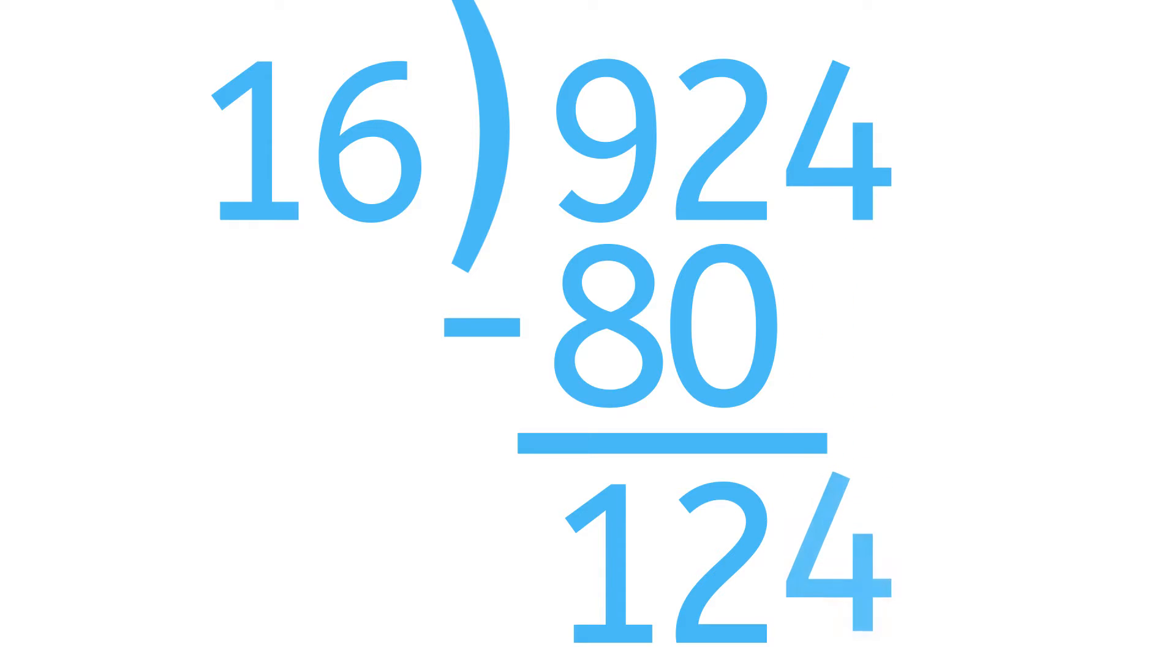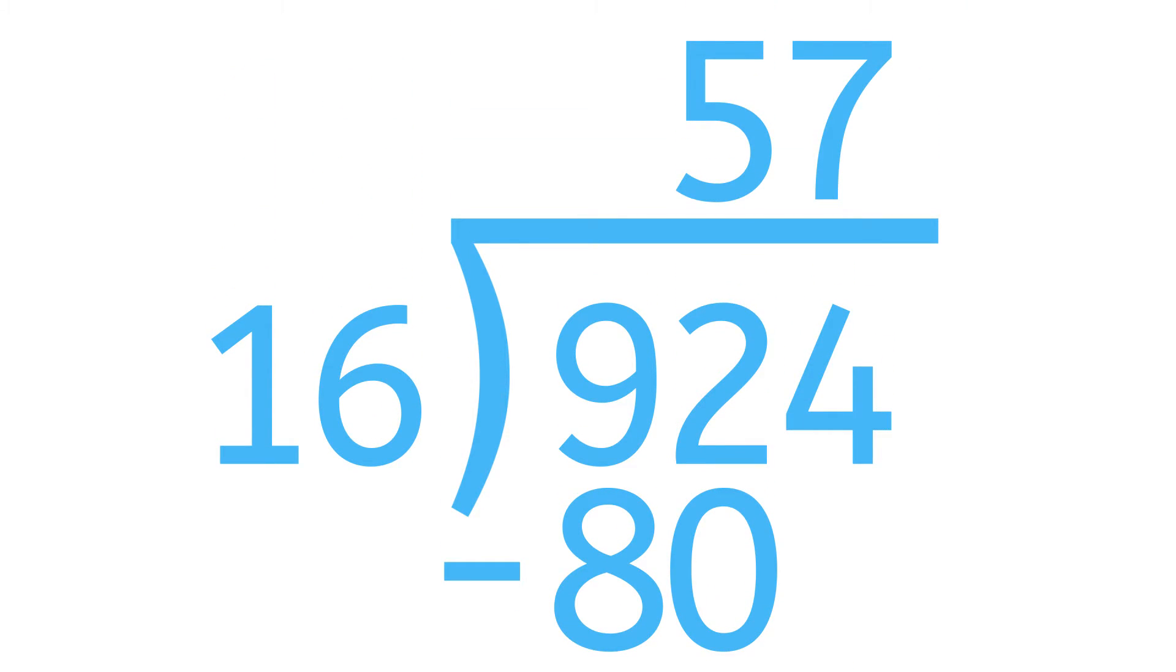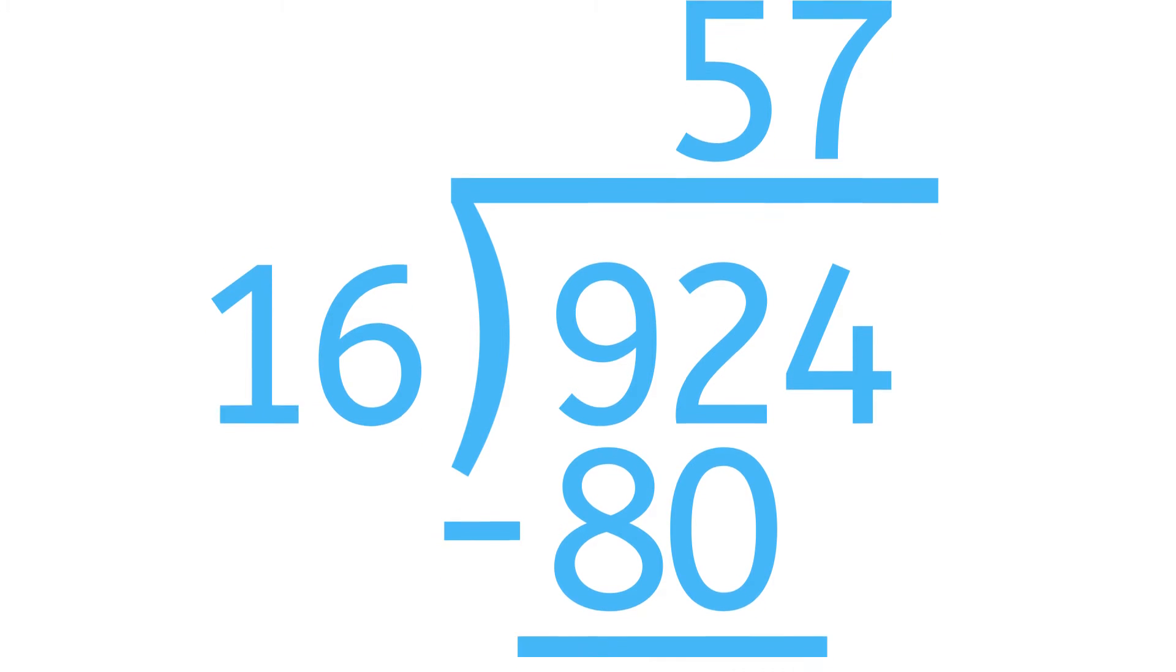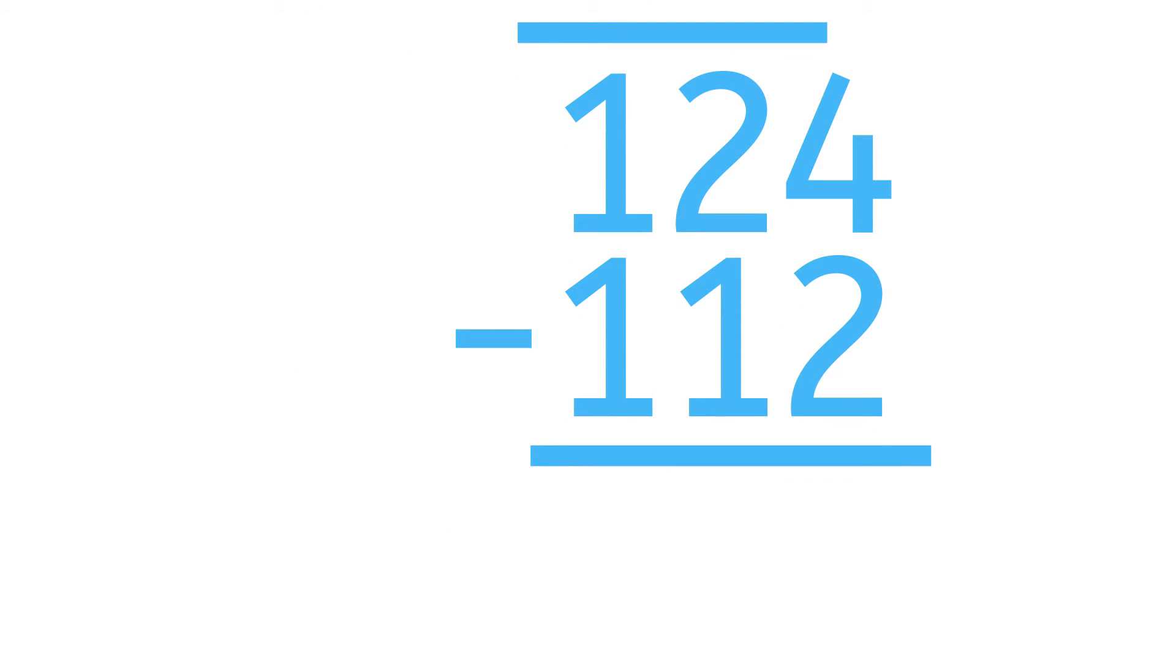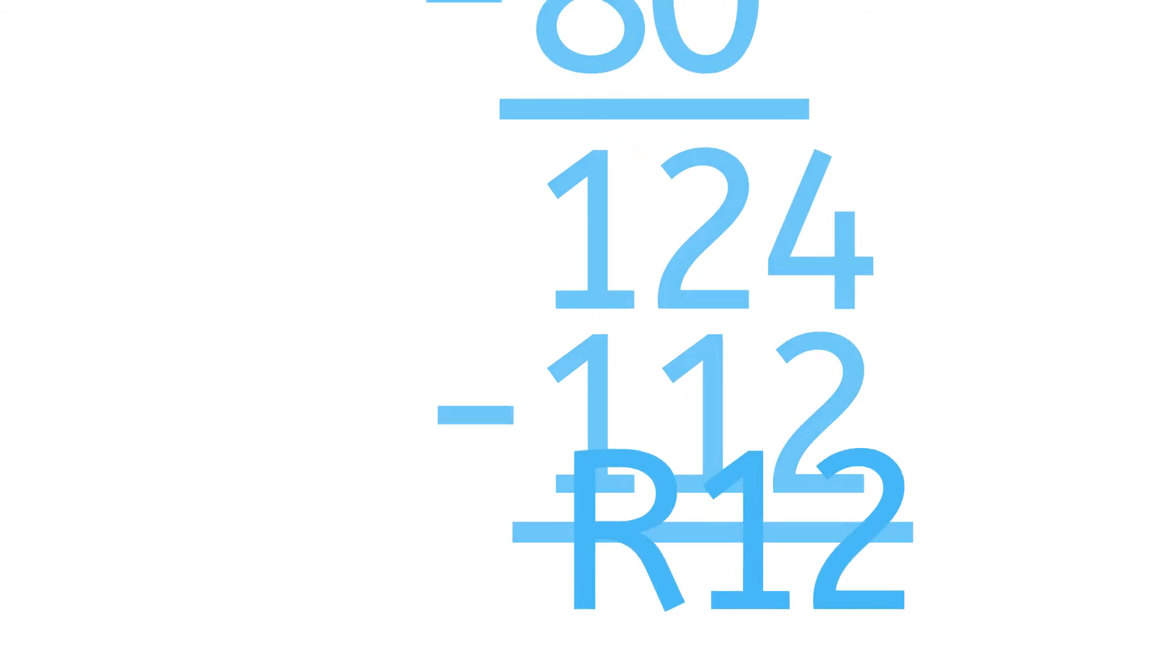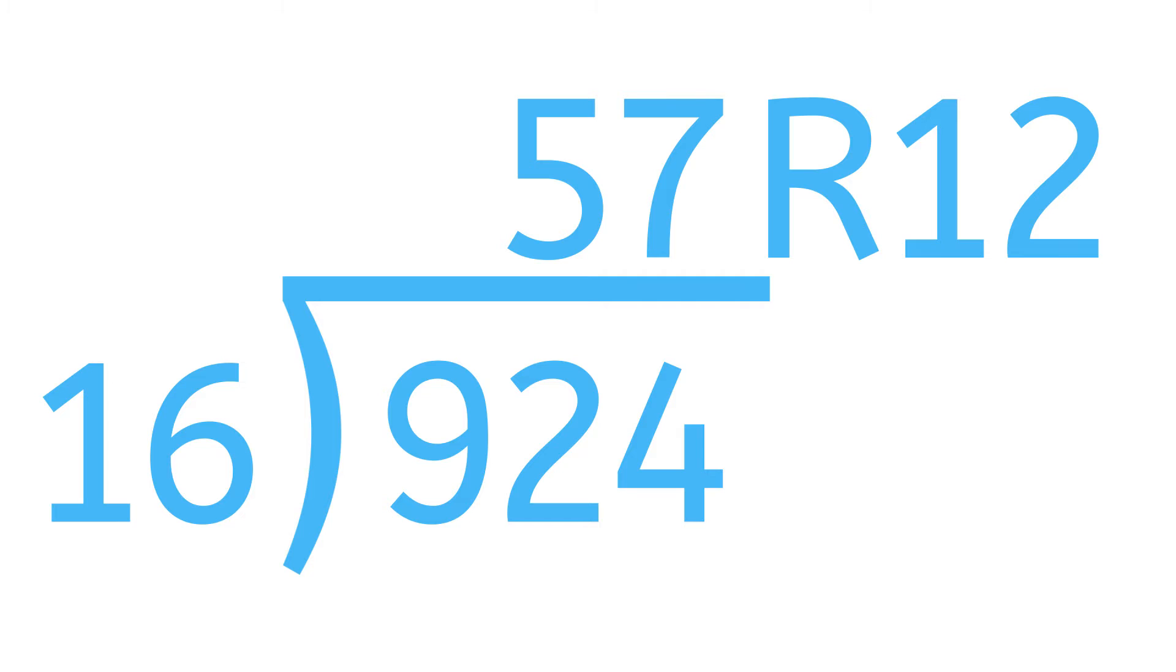So let's bring down the 4, and we have 124. 7 times 16 is 112, but 8 times 16 is 128. So we'll write a 7 over the 4 in 924. 124 minus 112 is 12, so that is our remainder. The answer is 57 R 12.